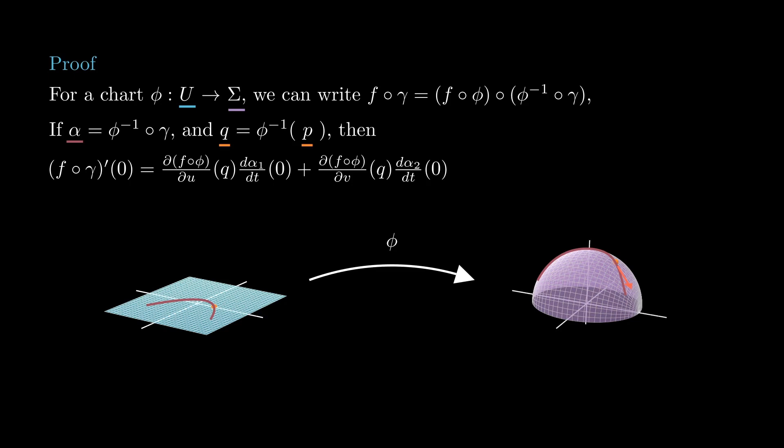Applying the chain rule to this composition, we can write the derivative of f in the direction w as a linear combination of the derivatives of f composed with phi, whose coefficients are the components of the derivative of alpha at zero.